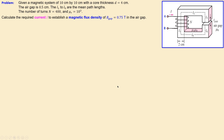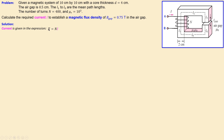Outside the core we assume vacuum, and inside we have core material with the given permeability. To find the current, we use the expression for magnetomotive force: MMF equals N times I. However, this gives two unknowns — F and I — so we cannot proceed with this expression alone.